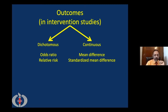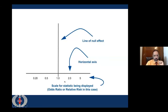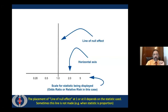Whatever statistics we use, we put them at the bottom. The second component of the forest plot is a vertical line called the line of null effect. This line is placed either at 1 or at 0, depending on what statistics you are using. If you are using odds ratio or relative risk, we place this line at 1. If you are using absolute risk reduction or standardized mean difference, we place this line at 0. Sometimes we even skip this line, for example if we are doing a meta-analysis on proportion.